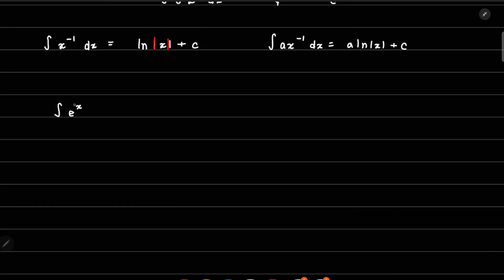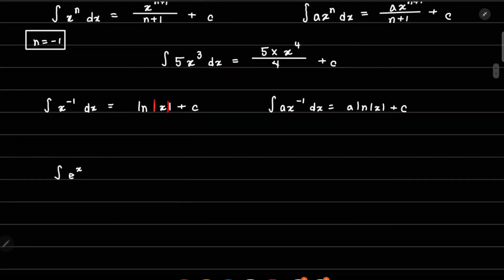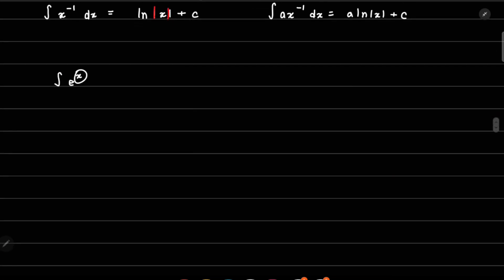Next we have the exponential forms. In these cases x is the power itself. The integration of e to the power x dx is simply e to the power x plus C. We could also have a constant a in front, giving a times e to the power x divided by a, which simplifies accordingly, plus C.